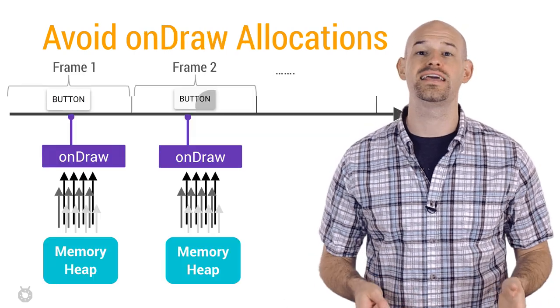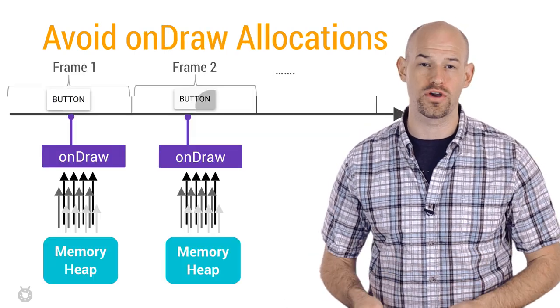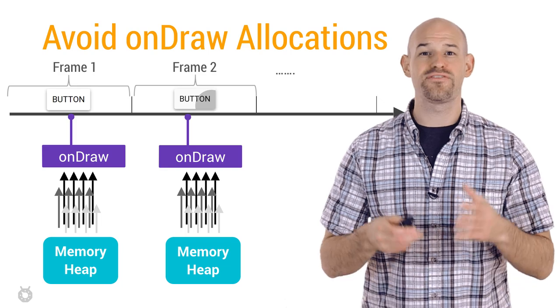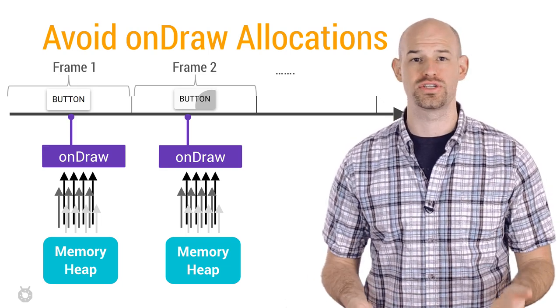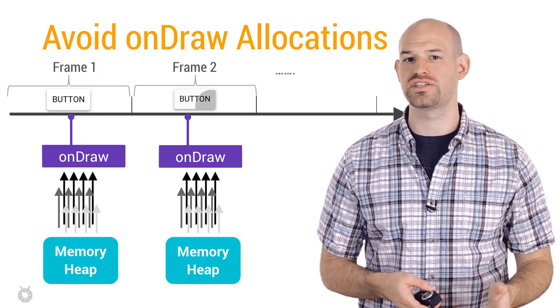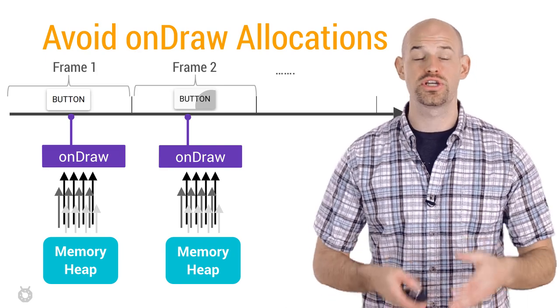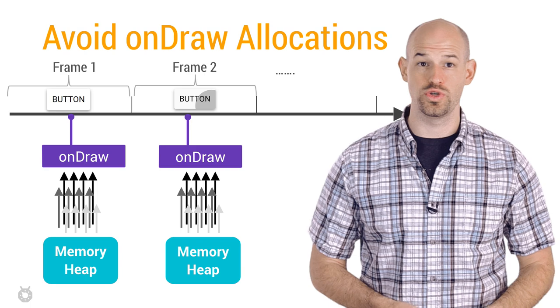The same advice goes for allocating objects in the onDraw functions of your views. This is effectively the same problem as an inner loop. Any time the screen needs to be redrawn or an animation is occurring, you'll end up with calls to these functions every single frame, which can quickly add up, adding pressure to your heaps.